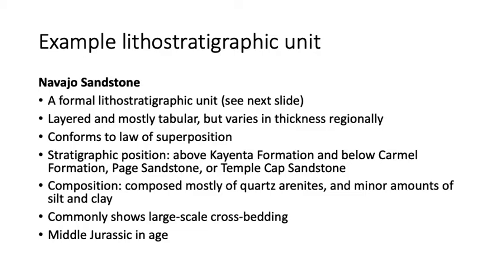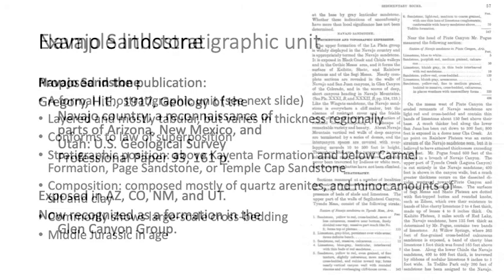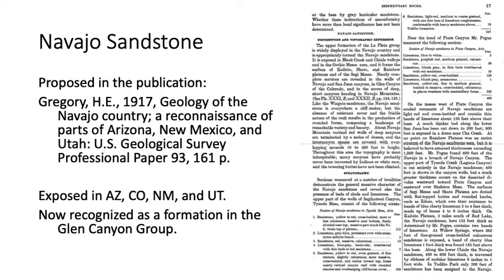The published description on slide 10 comes from Gregory, 1917, Geology of Navajo Country: A Reconnaissance of Parts of Arizona, New Mexico, and Utah — published over a hundred years ago. The Navajo Sandstone is exposed in Arizona, Colorado, New Mexico, and Utah, and was first described by Gregory. Even before the stratigraphic code was written, it was standard practice to describe rock units formally.